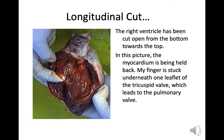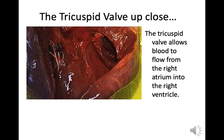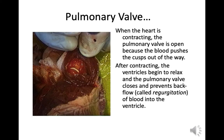Longitudinal cut: the right ventricle has now been cut open from the bottom towards the top, and the myocardium is being held back. A finger is placed underneath one leaflet of the tricuspid valve, which leads to the pulmonary valve. The tricuspid valve allows blood to flow from the right atrium into the right ventricle. When the heart is contracting, the pulmonary valve is open as blood pushes the cusp out of the way; when the ventricles relax, the pulmonary valve closes to prevent backflow — called regurgitation — into the ventricle.